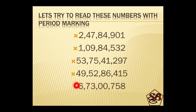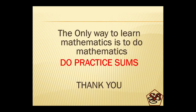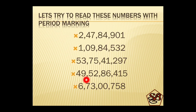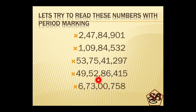Last number. Again this is starting with crores: six crore, 73 lakh, 758. If you see this, in the thousands place there are only zeros — we do not read them. We start from crores: six crore, 73 lakh, 758.